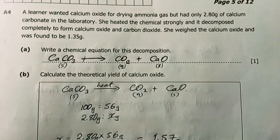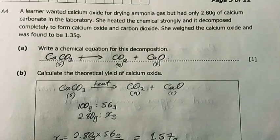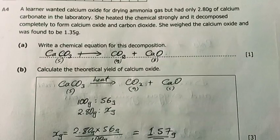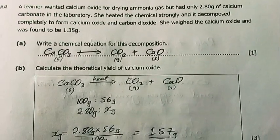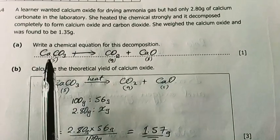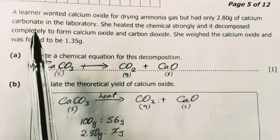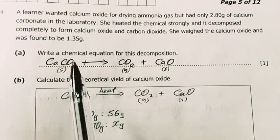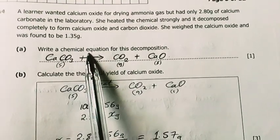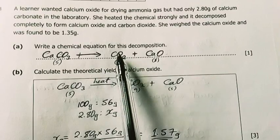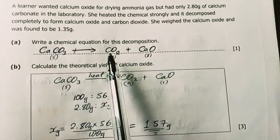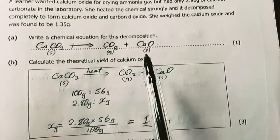Question four. Elena wanted calcium oxide for drying ammonia gas but only had 2.4 grams of calcium carbonate in the laboratory. She heated the chemicals strongly and it decomposed completely to form calcium oxide and carbon dioxide. She weighed the calcium oxide and was found to be 1.35 grams. Write the chemical equation for this reaction. So that's my chemical equation. The chemical equation is going to be calcium carbonate solid. Remember the state symbols. Calcium carbonate gives us after heating. You can even put heating here. You can put delta H which is okay to show that there's heating which took place. Carbon dioxide, calcium oxide. It's balanced just the way it is. Solid, gas, solid.